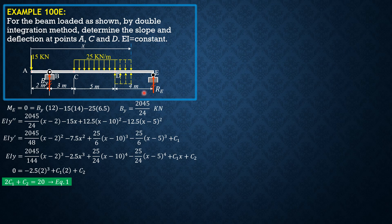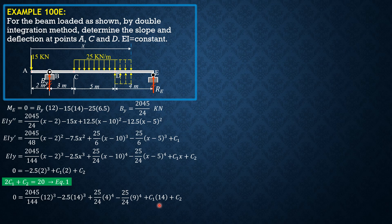Then X is 14 at E, Y is zero. So zero equals 2045 over 144 times 12 cubed minus 2.5 times 14 cubed plus 25 over 24 times 4 to the fourth minus 25 over 24 times 9 to the fourth plus 14C sub 1 plus C sub 2. Setting up the second equation: 14C sub 1 plus C sub 2 equals negative 266695 over 24. You may eliminate C sub 2 by subtracting equation 2 from equation 1 and solve for C sub 1.